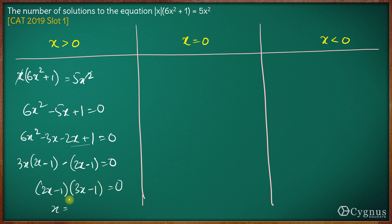So x here comes out to be either 1/2 or 1/3. Both of these are greater than 0, what we assumed, hence both these values are accepted.